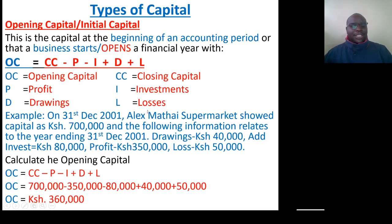On 31st December 2001, Alex Madai supermarket showed capital as 700,000. The following information related to the year ending 31st December 2001: drawings were 40,000 shillings, additional investments were 80,000 shillings, profit was 350,000 shillings, and loss was 50,000 shillings.